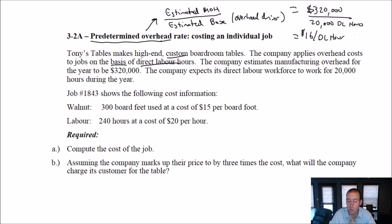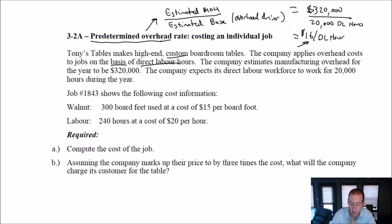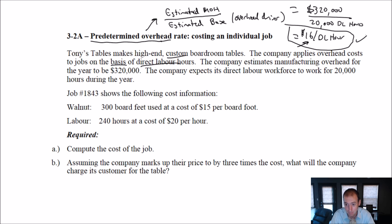What does this mean? This is what we're going to use to estimate our overhead costs. So when I want to figure out the cost of a job, I'll say my material cost is this — I know how much material I brought to the table. I'll also know how much labor costs because I'll know the wage of the employee that worked on that job. But what I need to estimate is the overhead. And what they've said is: look, we're going to estimate that it's going to be $16 of overhead for every labor hour. It might be higher, it might be lower, but that's going to be our estimate.